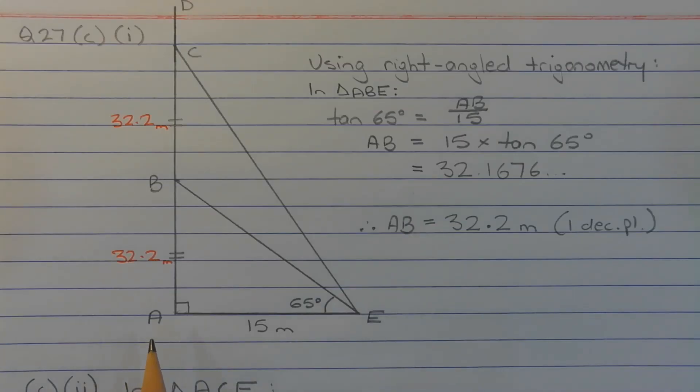Consider right angle triangle ACE. Now the question is asking for the length of the hypotenuse CE. Now we know the length of one of the short sides, which is length AE.